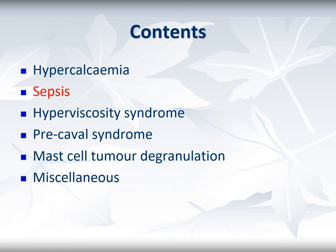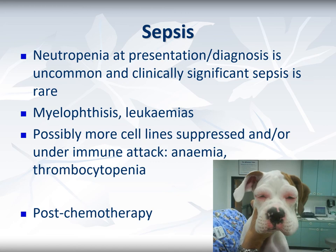Moving on to sepsis. Occasionally neutropenia is the presenting problem, though sepsis is uncommon before treatment. Neutropenia can occur with myelophthisis and leukemia, possibly with suppression of multiple cell lines. Such neutropenic cases will only have resolution from their tumours after chemotherapy, and starting chemotherapy while already neutropenic creates a high risk for later sepsis. Most patients with sepsis present after chemotherapy, either three to five days later or around the time of the neutrophil nadir for the particular drug used. Always bear in mind that any sepsis or other comorbidity might simply be a comorbidity in an otherwise complication-free chemotherapy patient.